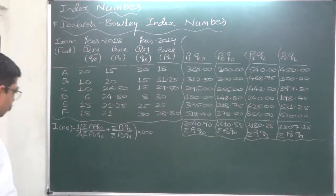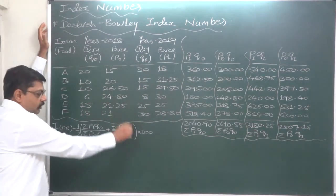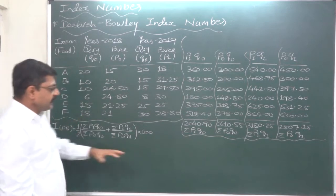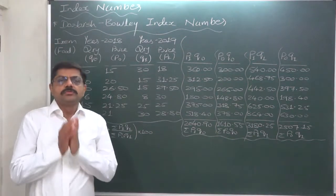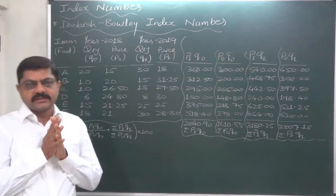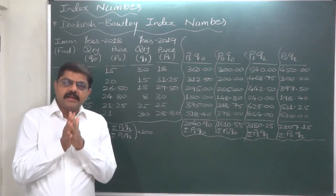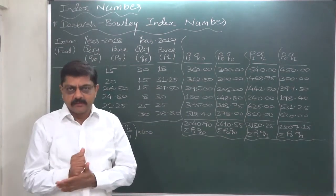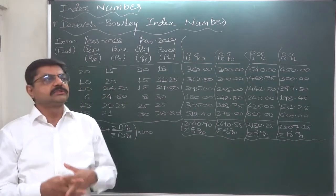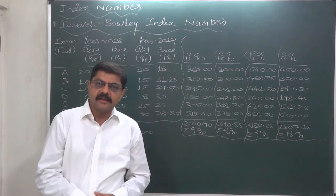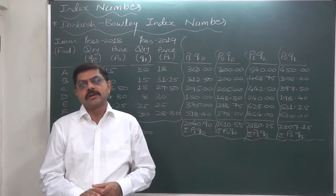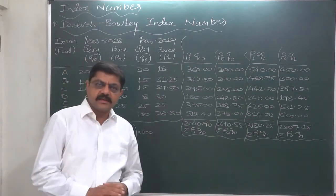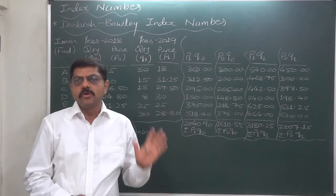Now let's calculate the Dorbish and Bowley index number. Statistics — quantities and prices — of both the years, base as well as current, are considered. That is the greatest merit of this method. However, according to many philosophers, economists, and statisticians, geometric mean is a better measure for any index number than simple arithmetic mean. But we have to follow the curriculum and syllabus, and in many universities, we need to study Dorbish and Bowley index number.